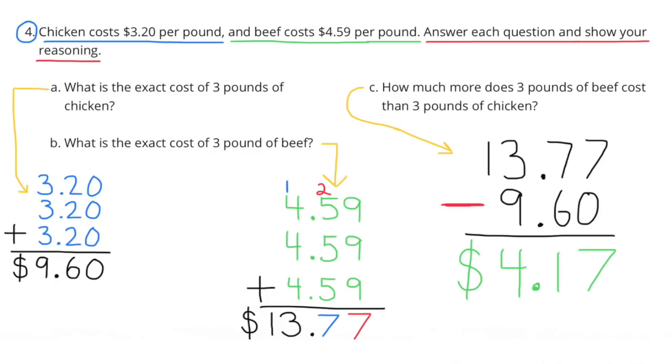Problem 4: Chicken costs $3.20 per pound and beef costs $4.59 per pound. Answer each question and show your reasoning. Part A: What is the exact cost of three pounds of chicken? $3.20 plus $3.20 plus $3.20 equals $9.60.